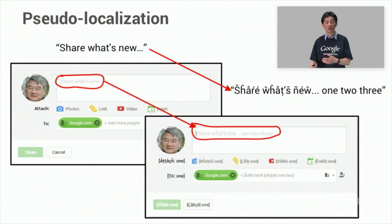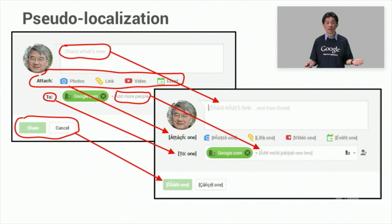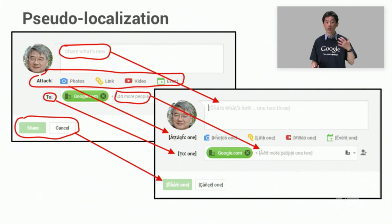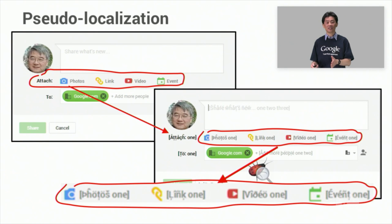For example, the string 'share what's new' was made longer by adding 1, 2, 3 to the end, and all the ASCII characters are converted to similar-looking non-ASCII characters. You don't need to know German or some other language to test and debug your app. The tools will automatically pseudo-localize all the strings in your UI to help you find hard-coded strings and UI layout problems. If you look closely at this example, it found a real problem — in Google+, you can see the icons were being clipped by the long text, and on the right side those icons are lost.